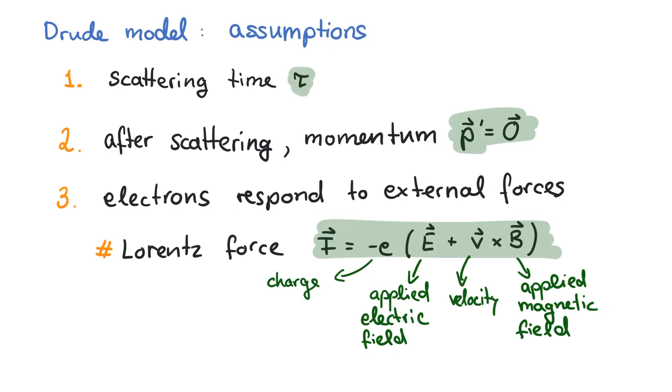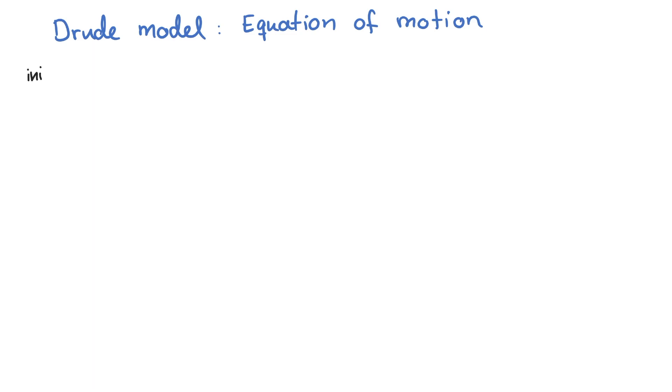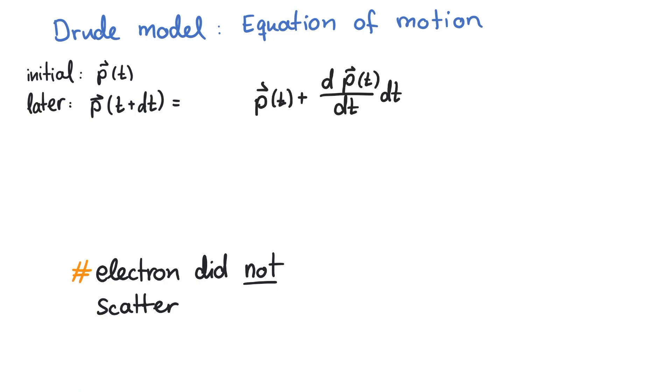Let's use these three assumptions. There is an electron at time t with momentum p. A bit later in time, it has the momentum p of t plus dt. When the electron did not scatter, the momentum can be expanded. We discover Newton's definition of the force and get a simple expression.